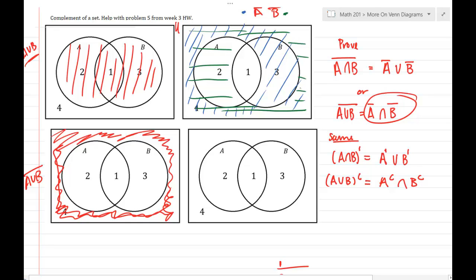Now you can see the only place where there's green and blue is region 4, right? So if I take A complement and intersect it with B complement, I just get region 4. So here all I had was region 4, here all I had is region 4, so that means that they are equal.